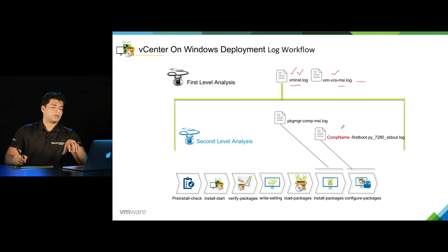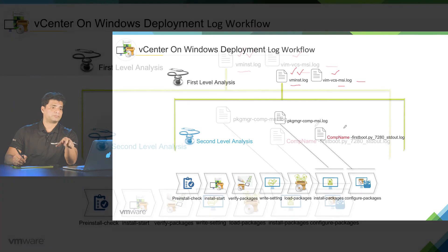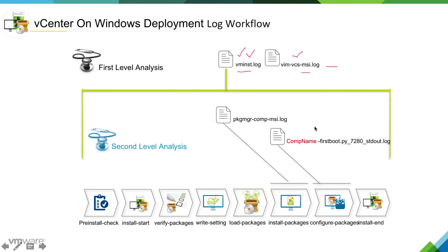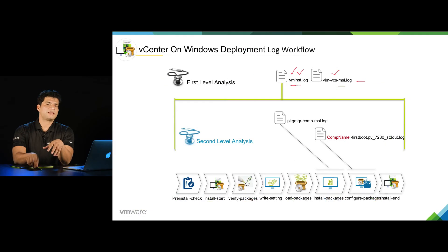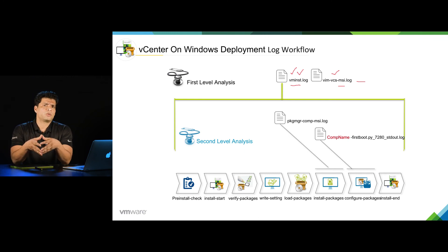You need to get the timestamp for that particular issue and go to the related component's first boot log, and you will be able to get enough information to isolate the problem. The installer then moves into the last stage — the install end stage — where no additional second-level log is created. We have only vm_install.log and vim_vcsmsi.log. So now we understand at which stage vCenter on Windows installation can fail, and what the different logs are at what different stages they are created.